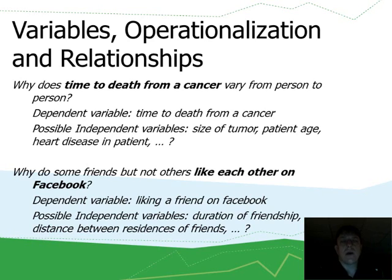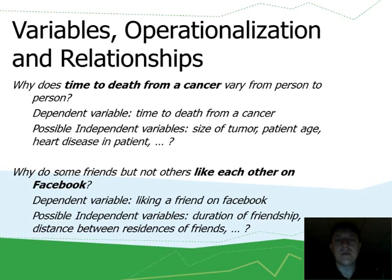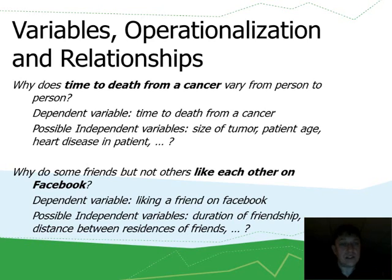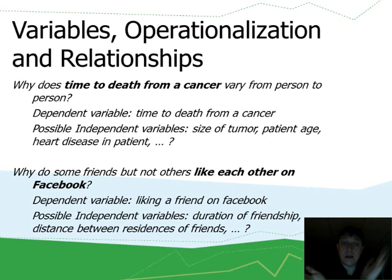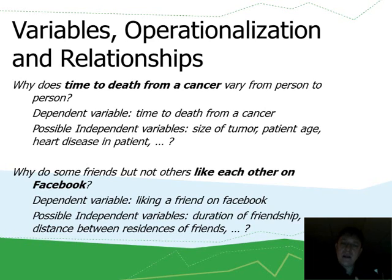Let's say we're asking this research question: why does time to death from cancer vary from person to person? If you're engaged in a fight against cancer, you want to know why some people die more quickly and some take a longer time. So if we have our dependent variable — time to death from cancer — we can think of possible independent variables: the size of the tumor, measurable in centimeters; patient age in years; and whether there is heart disease in the patient, which is a dichotomous variable with two possible values: yes and no. Those are all independent variables — things that affect the dependent variable, or at least you think they may.